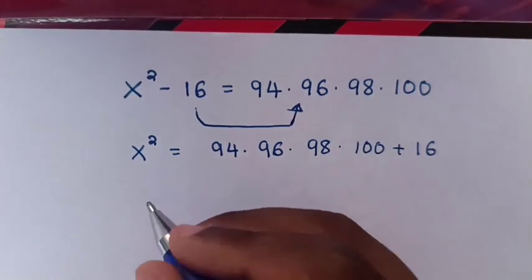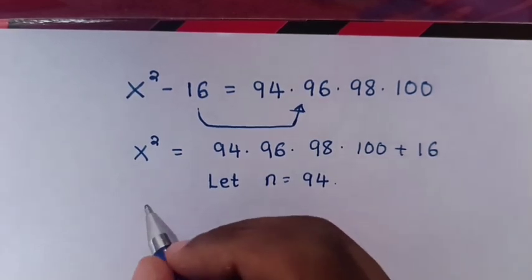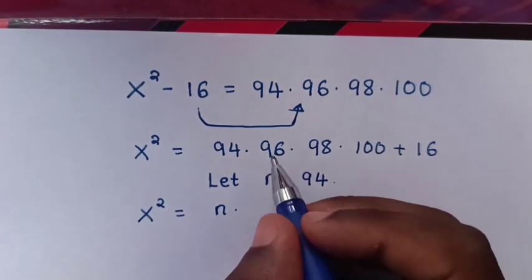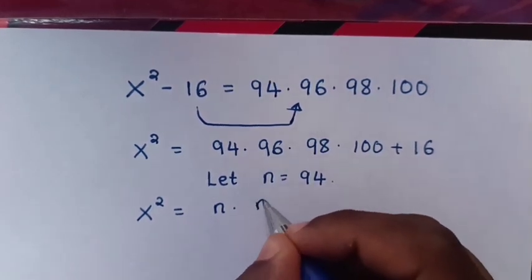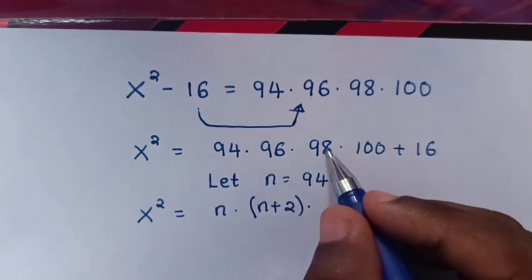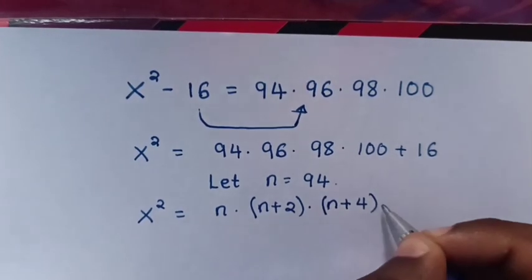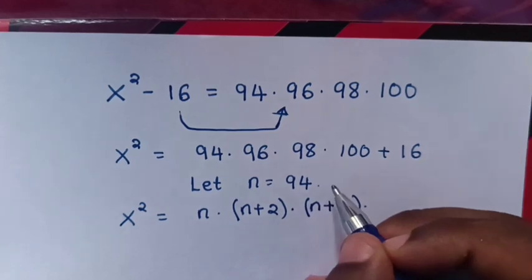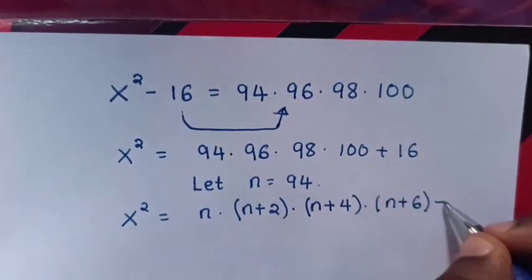Then we let n equal to 94. So it will be x squared is equal to n times — the difference from 94 to 96 is 2, so it will be (n+2) — times — the difference from 94 to 98 is 4, so it will be (n+4) — times — the difference from 94 to 100 is 6, so it will be (n+6) — plus 16.